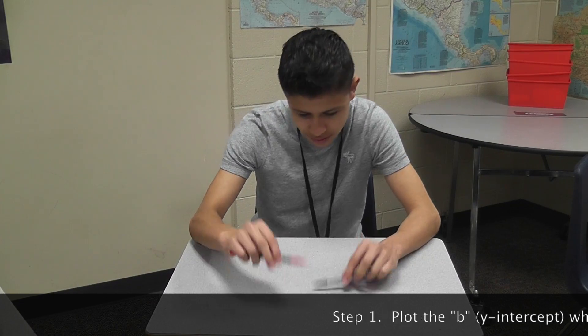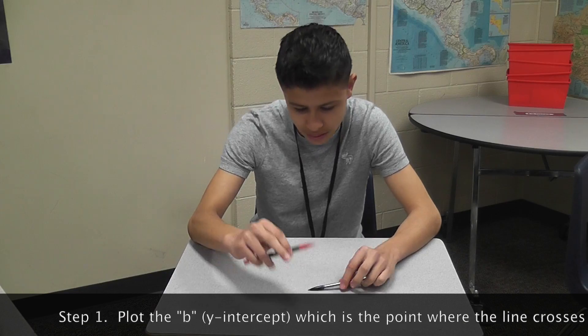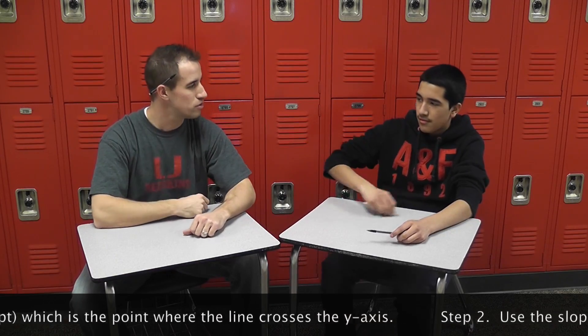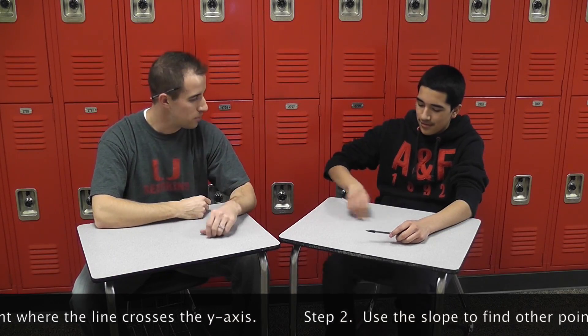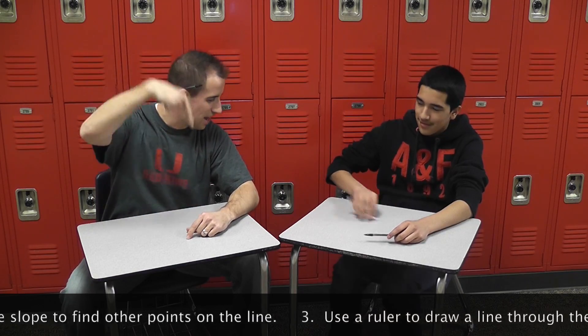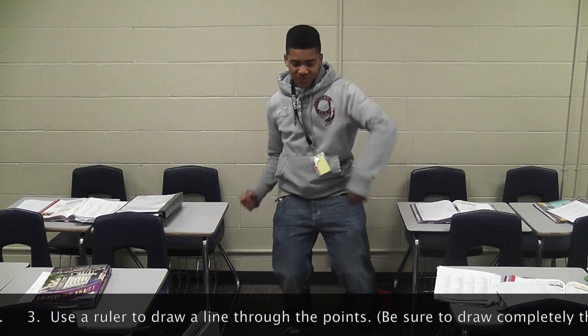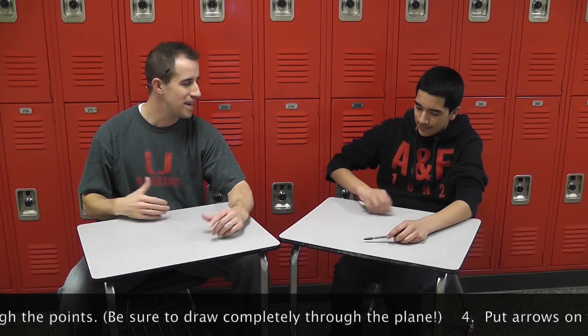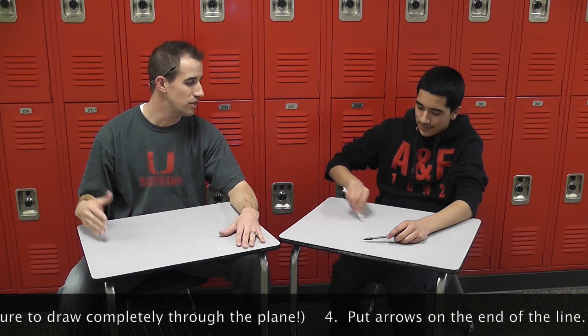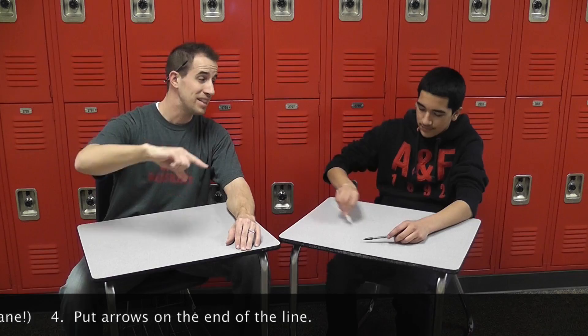First you plot the B, which is where the line passes through the Y line — that's the vertical axis. Then you use the slope, which will help you define the next point on the graph of this linear line. Draw a line through the points, draw it straight, use a ruler. Completely through the plane, that'd be even cooler. Murphy, are we done? Now check it, listen to me. Put some arrows on the end to show infinity.